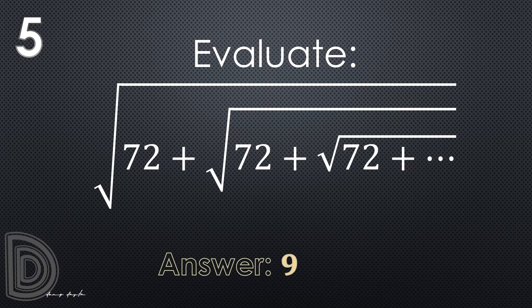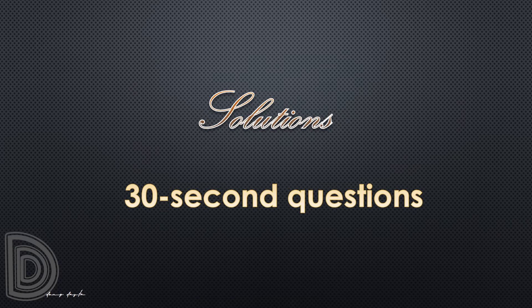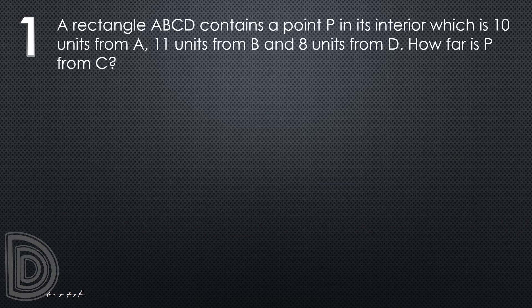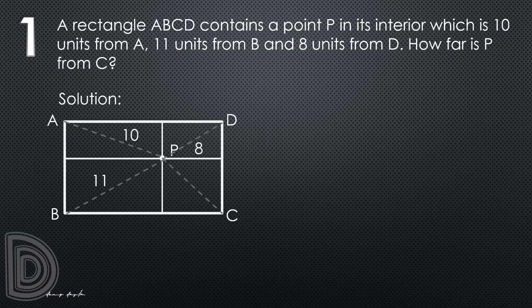Time is up. Let us see your answers. The answer is 9. Okay, did you get all 5? Now let us show the solution to the 5 items in this average round. Solutions to our 30-second questions. For question number 1, we are given a rectangle ABCD containing point P in its interior that is 10 units from A, 11 units from B, and 8 units from D. The question: how far is P from C?